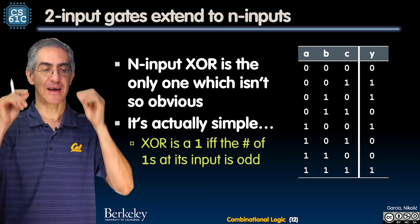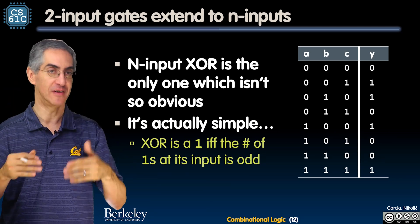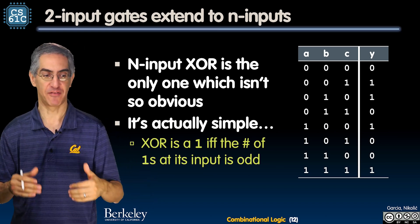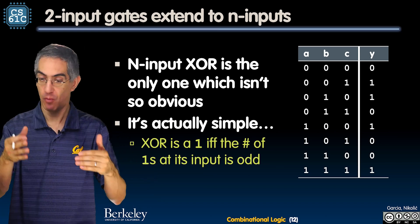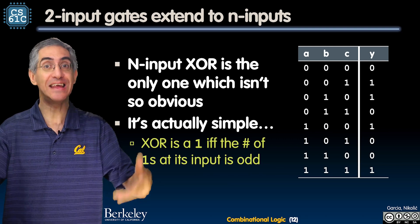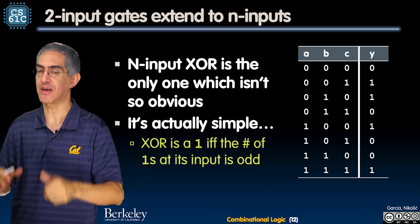Now, let's think about if you have logic gates, extending them to N dimensions, not N dimensions, N inputs. Most of them make sense. If I have an AND, if I have a 10 input AND, it means you're a 1 only if all 10 are 1. If you have a 10 input OR, it's a 1 if any of the 10 inputs is 1. It's the same thing.